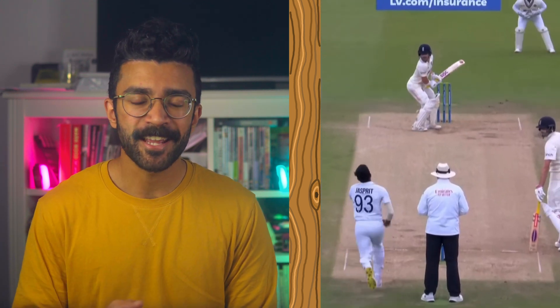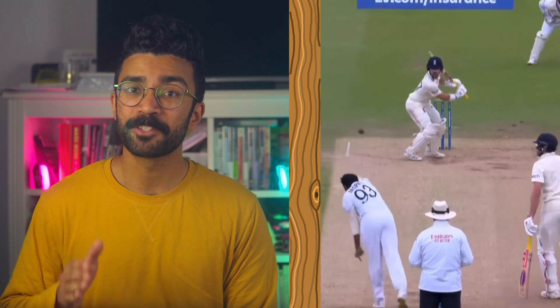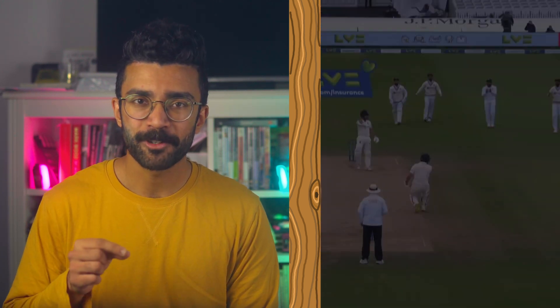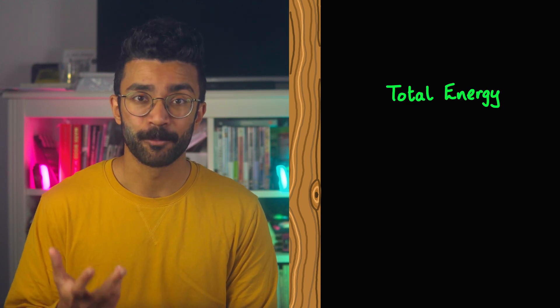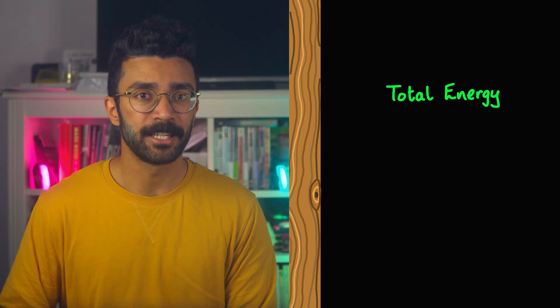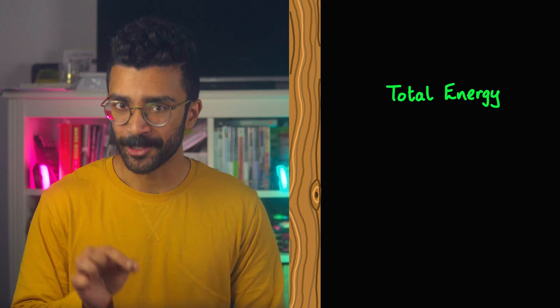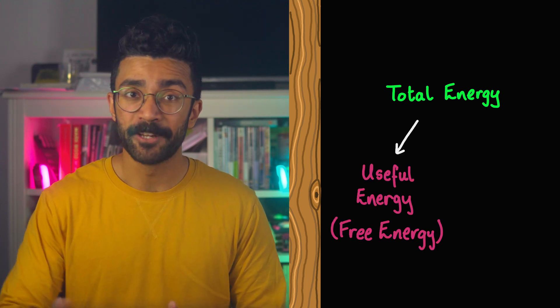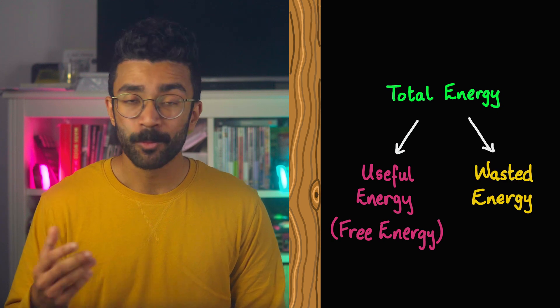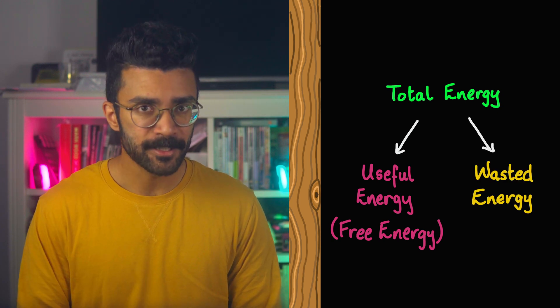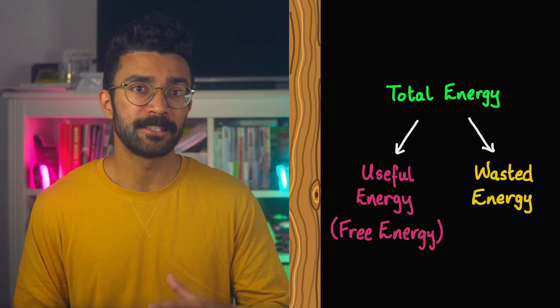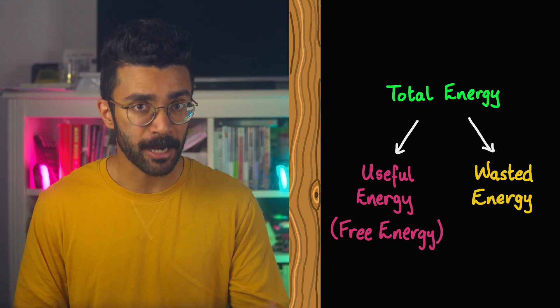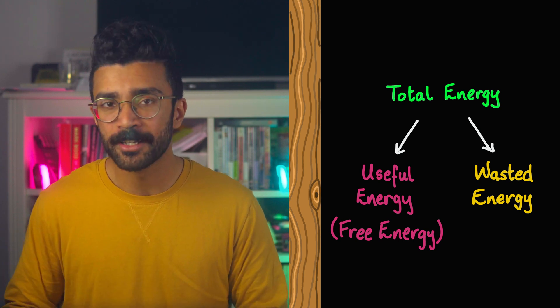Let's imagine our cricketer here. In this case, our system's free energy would be a measure of how much energy is available to be converted into useful work. The store of energy from which it's available is the chemical energy within the bowler's body. And useful work is the energy that gets transferred into the bowler's run-up and eventually actually bowling the ball. The wasted energy is transferred as heat — the heat in the bowler's muscles and the heat that escapes into the ground as the bowler strikes with their foot and so on.